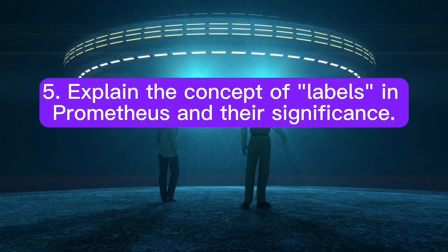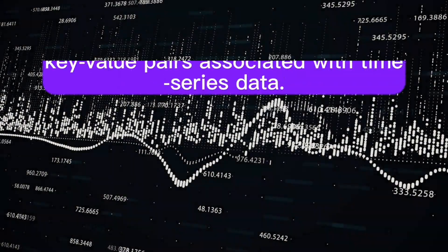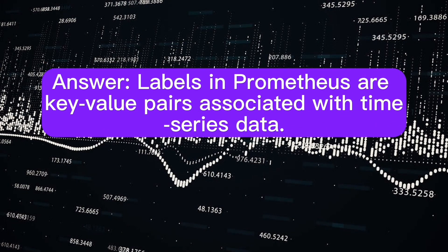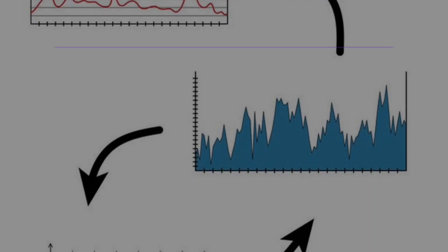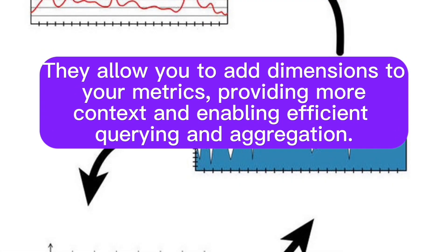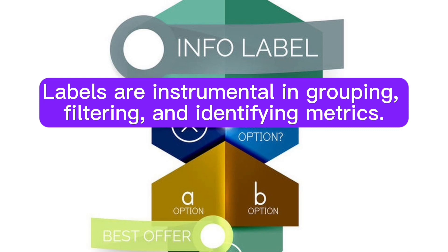Explain the concept of labels in Prometheus and their significance. Labels in Prometheus are key-value pairs associated with time series data. They allow you to add dimensions to your metrics, providing more context, and enabling efficient querying and aggregation. Labels are instrumental in grouping, filtering, and identifying metrics.